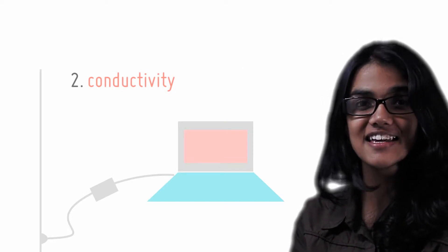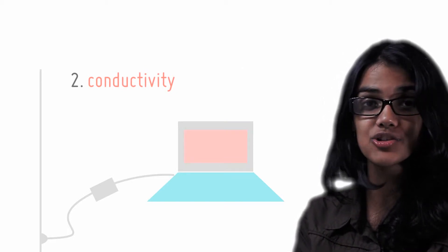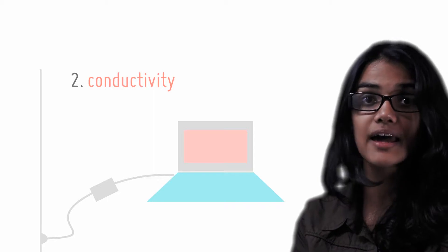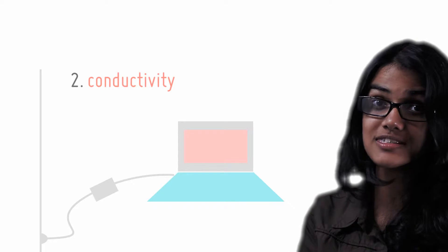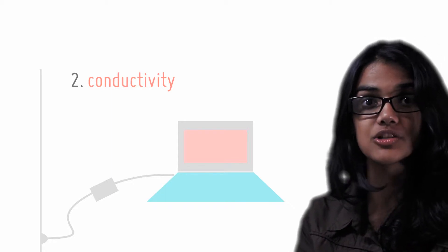The second is conductivity. This means that metals can easily contain and transport electricity. This is why the wires that connect your computer to a power source contain a metal like copper, so that electricity can easily transfer from the outlet to your battery.